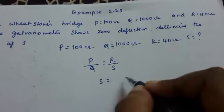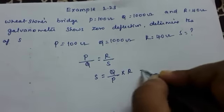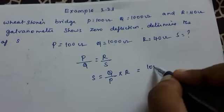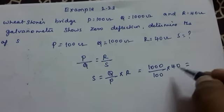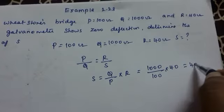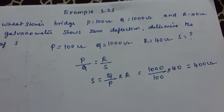S equals Q by P into R. What is the value? 1000 by 100 into 40, which is 400 ohm. This is a simple question.